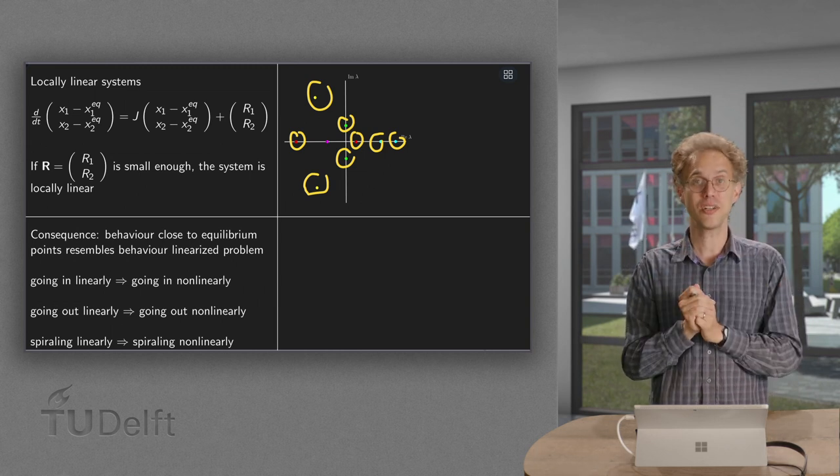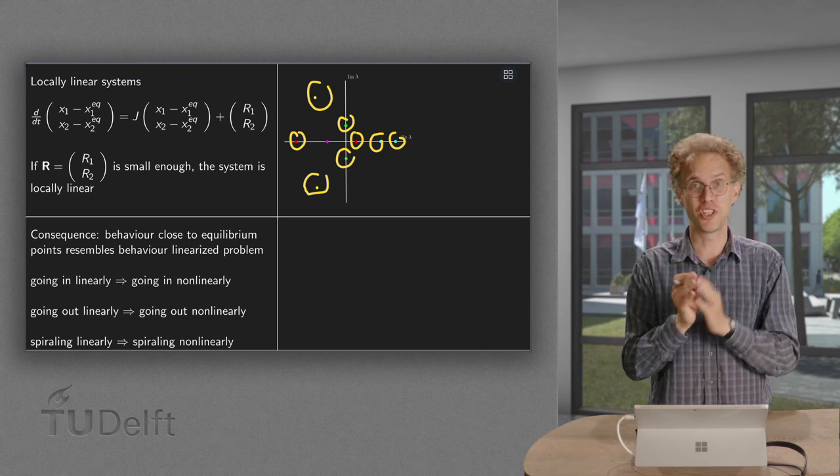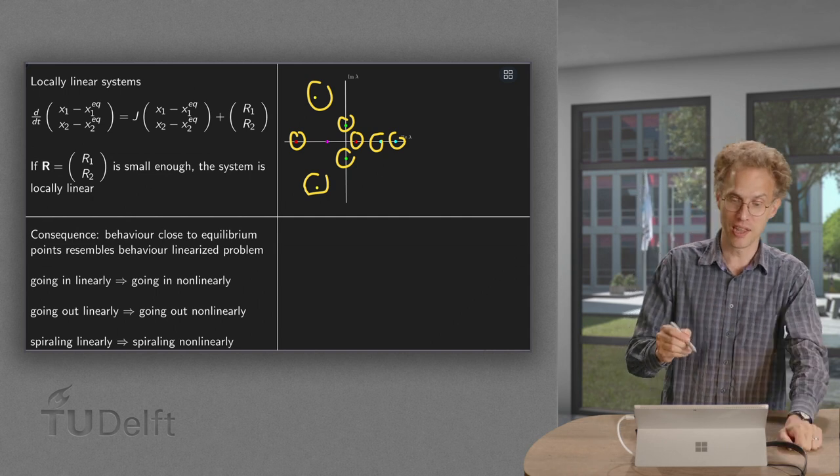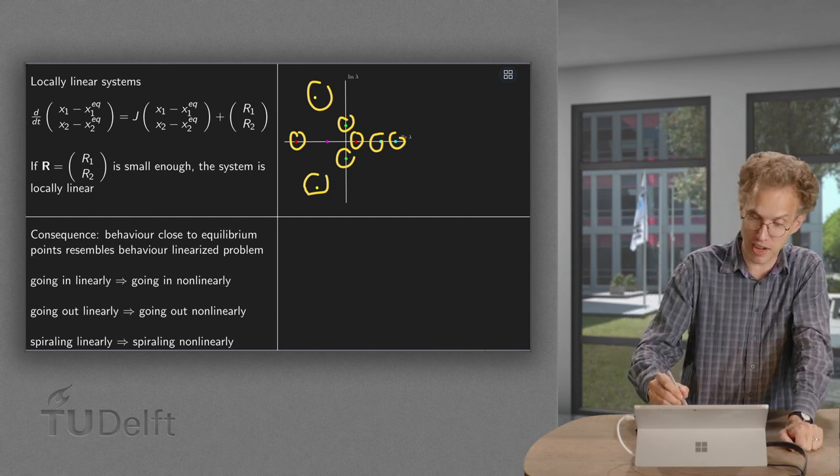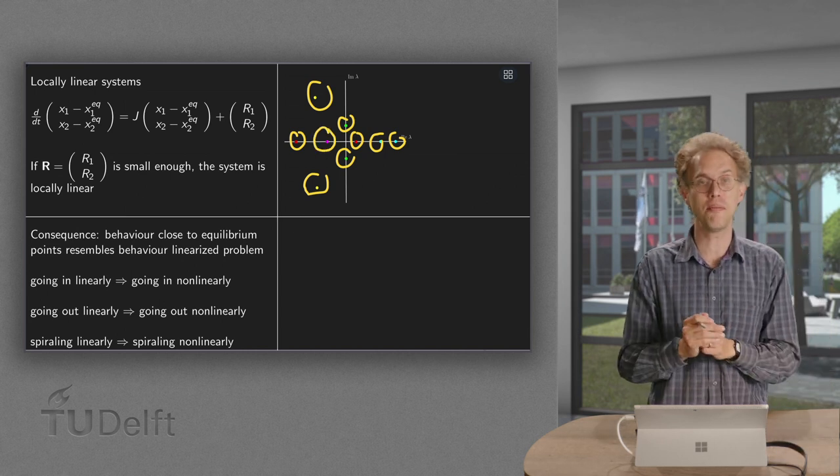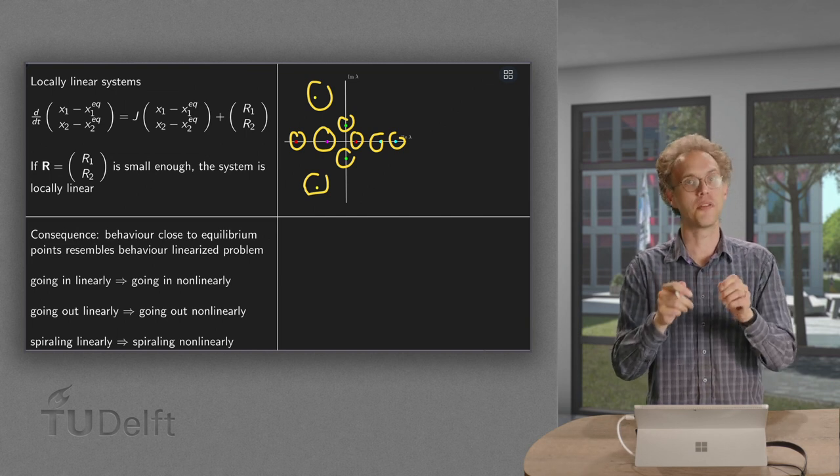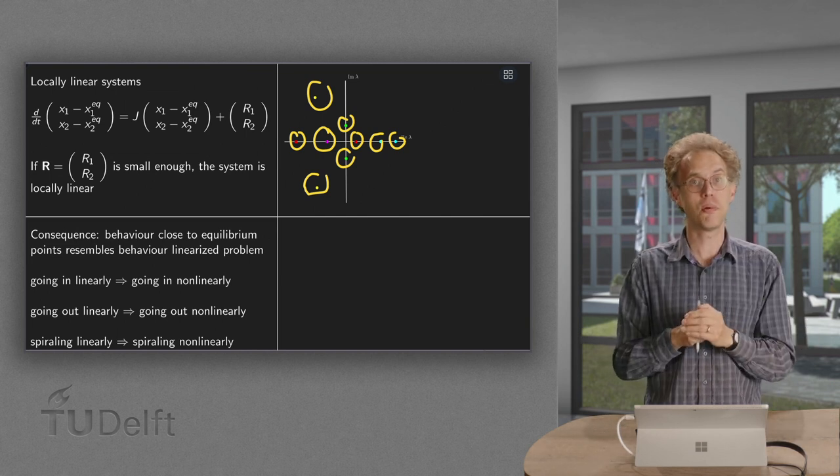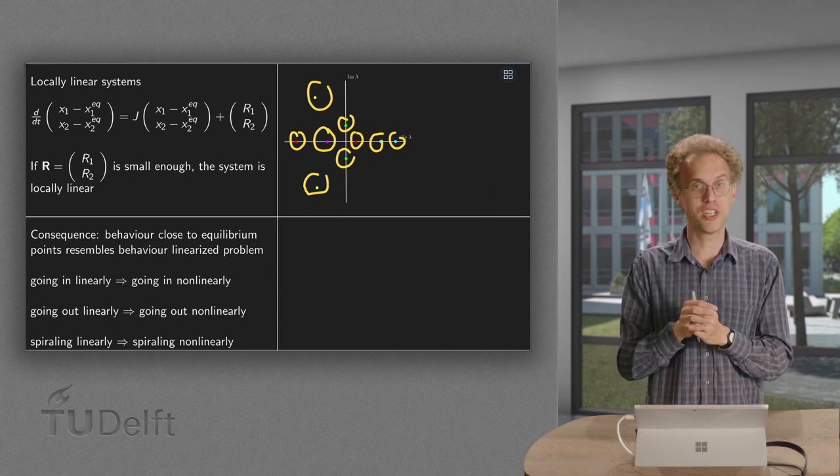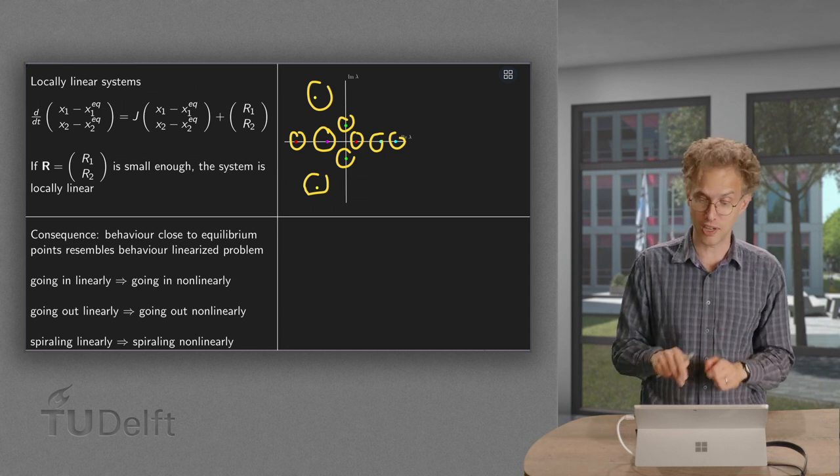So if you have a center, complex eigenvalues with zero real part, if you have a center linearly, you do not know what's going to happen non-linearly. Something similar happens if you have two eigenvalues which are real and the same. Again, if you perturb them, they can stay on the real axis or they can go into the complex plane. So also in that case, two real eigenvalues which are the same linearly, you also don't know what's going to happen non-linearly.